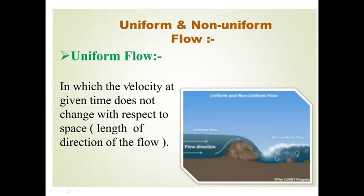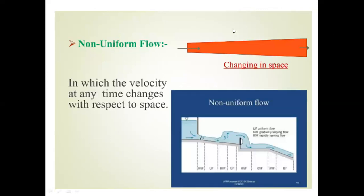The second type is uniform and non-uniform flow. In uniform flow, the velocity of the fluid does not change with respect to space or with respect to the direction of flow. You can see in the picture: the upper part shows uniform flow where the speed and direction of the fluid do not change. Whereas non-uniform flow means the velocity at any given time will change in direction. This change occurs when there is a change in volume — for example, when the volume is gradually increasing along the flow path — which causes non-uniform flow.